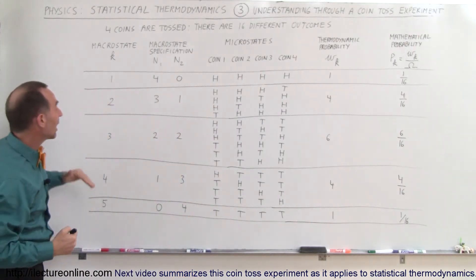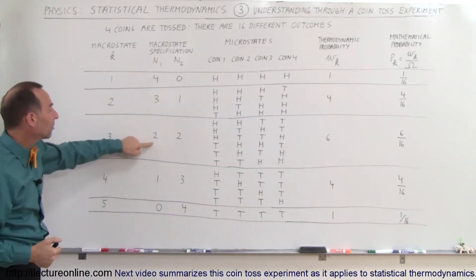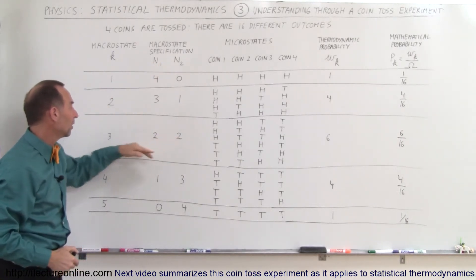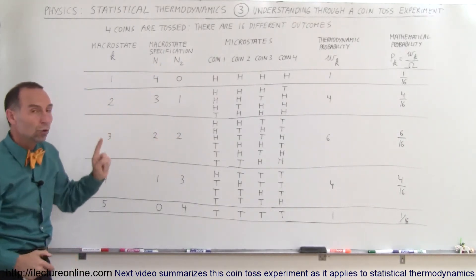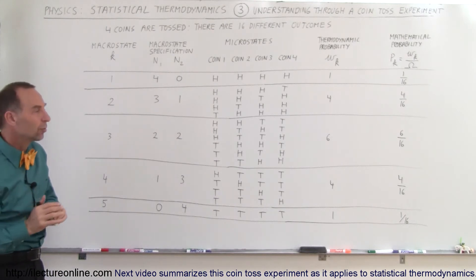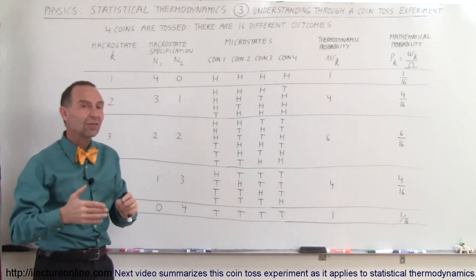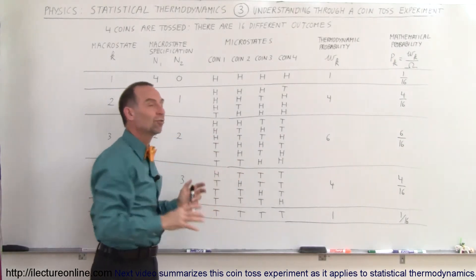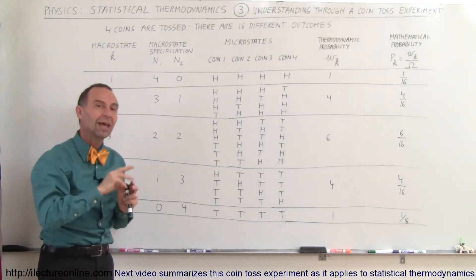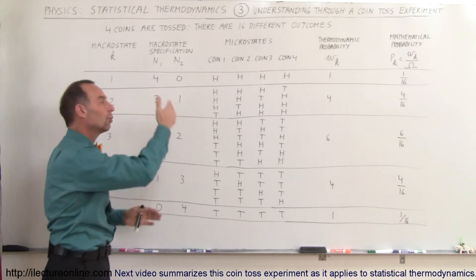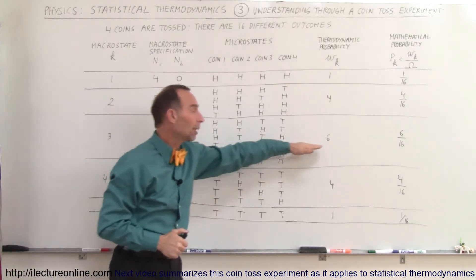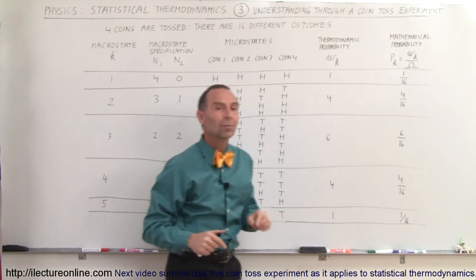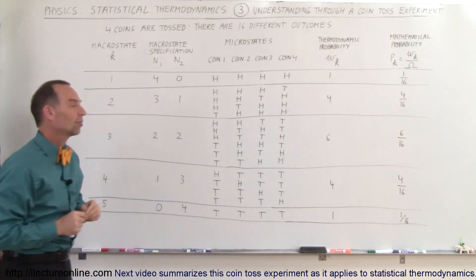The next macro state is two heads and two tails. Specification n1=2, n2=2, the third macro state. Notice there's a total of six micro states. The highest thermodynamic probability is, of course, this one. It's more likely that two will come up heads and two will come up tails than any other arrangement. The thermodynamic probability is 6, meaning six out of 16 outcomes are this particular set of arrangements.